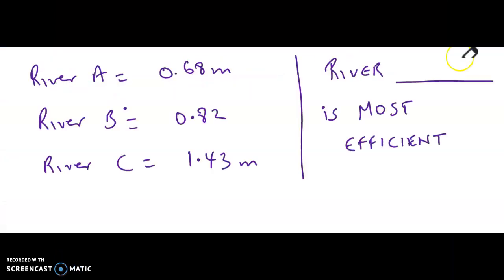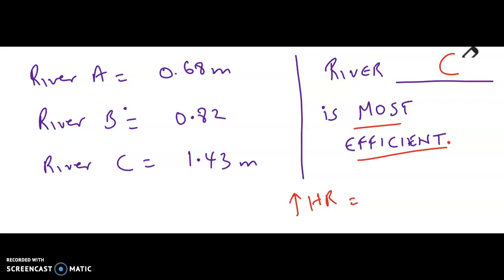From the information we have, river C is the most efficient. The reason is that the hydraulic radius is a unique estimation which determines the efficiency of a stream. The higher the hydraulic radius, the higher the efficiency. There is a positive correlation between the hydraulic radius and the efficiency of that particular river.